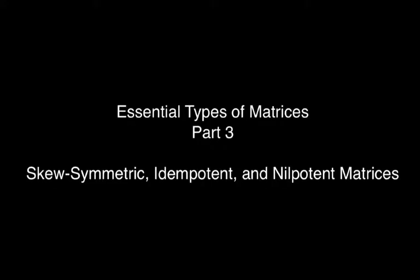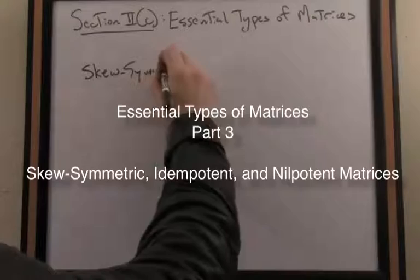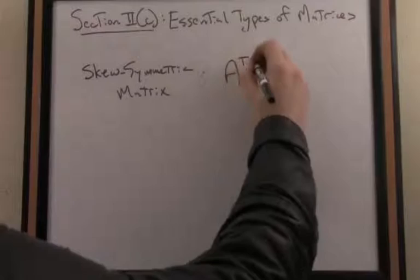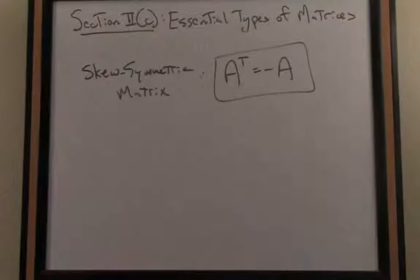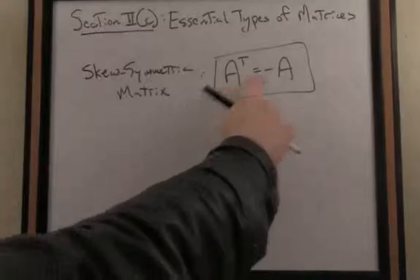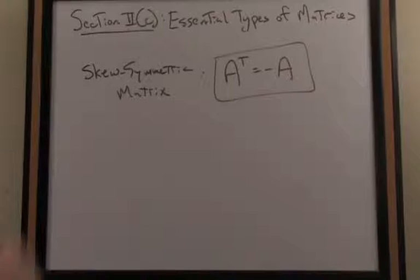Another common type of matrix that appears in applied areas is something called a skew-symmetric matrix. By definition, a matrix whose transpose equals the negative of the original matrix. In other words, if I swap the rows and columns of A, that yields the negative of the original matrix.